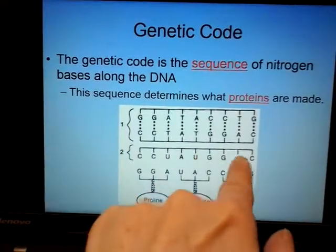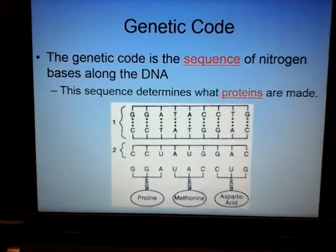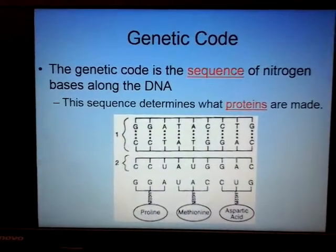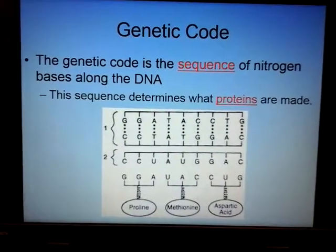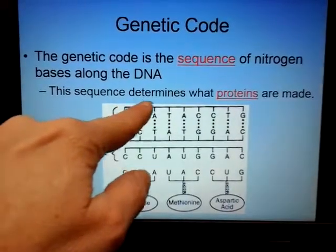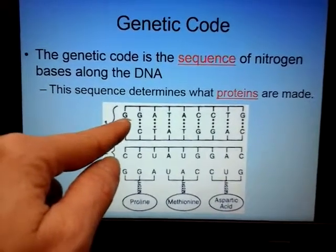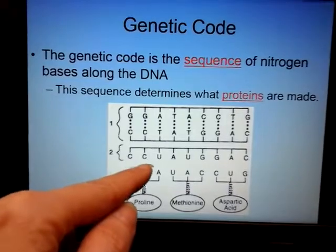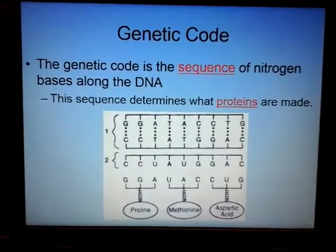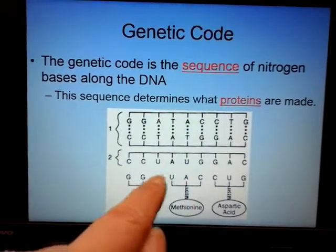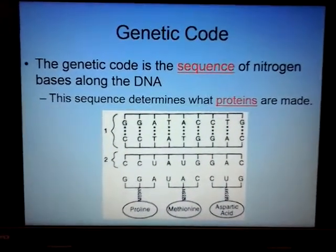I photocopied the recipe — that's messenger RNA. And my measuring cups are transfer RNA. One transfer RNA carries one amino acid. On DNA, three bases in a row are called triplets. On messenger RNA, three nitrogen bases in a row are called codons, and they tell me what ingredient I need. On transfer RNA, three bases in a row are called anticodons, and they match up with the codons.